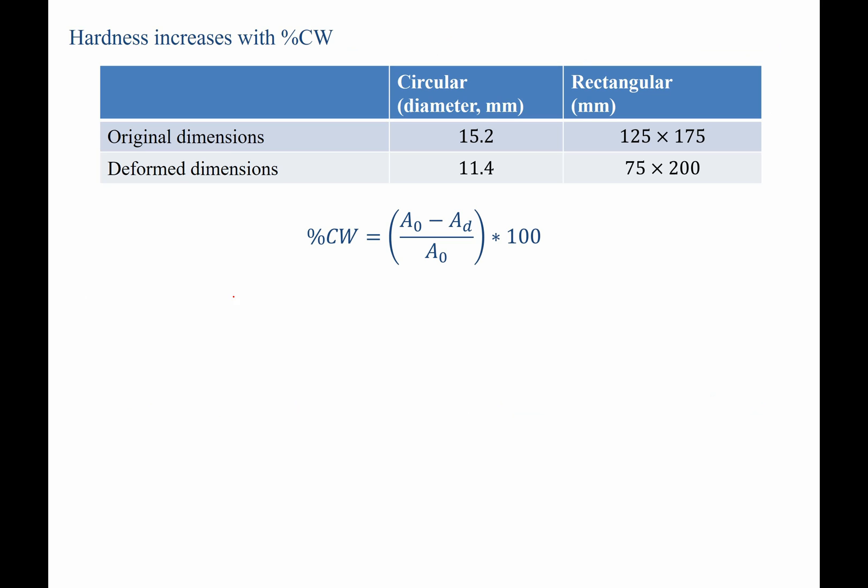For a circle, this means that we are taking pi r squared minus pi r squared, the difference being the initial radius versus the deformed radius, multiplying it by 100%.